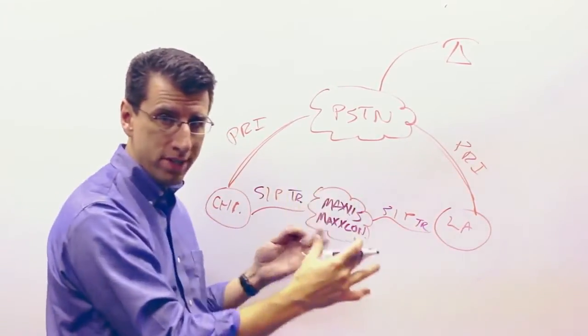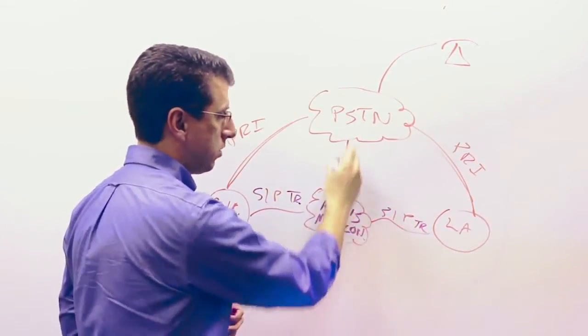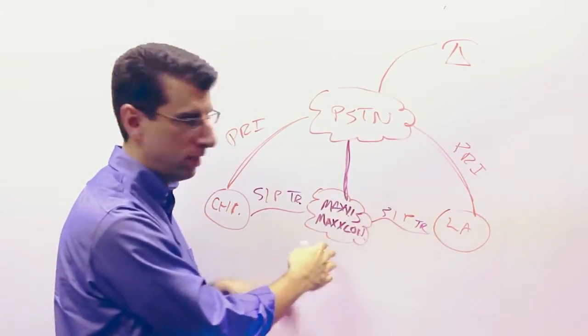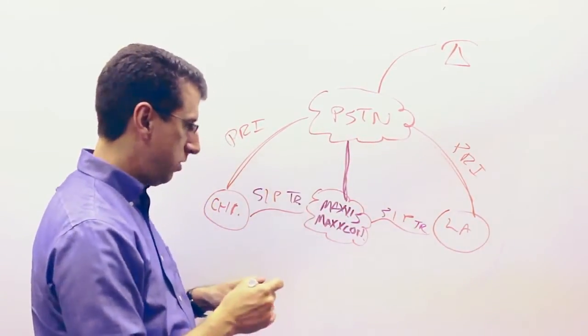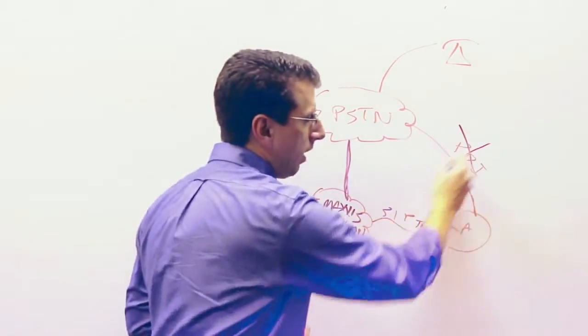And then we handle the voice interconnections out to the PSTN. So we have a master relationship basically between Maxis and Max Connect out to the PSTN, which means you don't need these PRIs anymore. The PRIs go away.